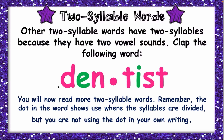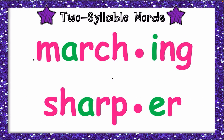You will now read more two-syllable words. Remember, the dots in the word show us where the syllables are divided. The dots in the middle show us where the syllables are divided, but you will not be using the dots when you're writing your own. So we have 'marching' and 'sharper'.